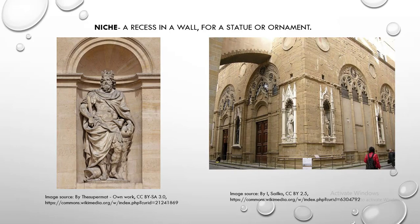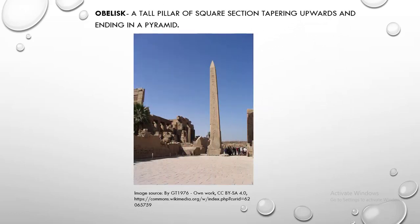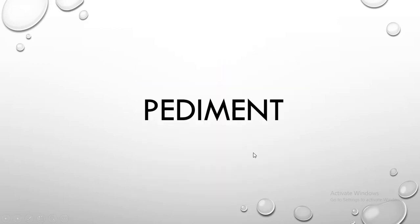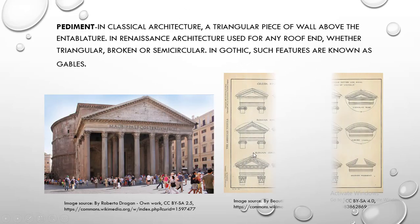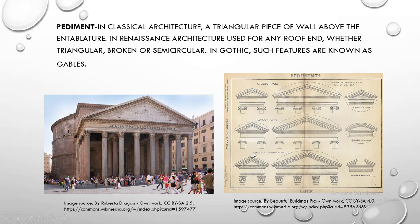Niche. Niche is a recess in a wall for a statue or ornament. Obelisk. Obelisk is a tall pillar of square section tapering upwards and ending in a pyramid. Octostyle. Octostyle is a portico with a range of eight columns. Pediment. Pediment is, in classical architecture, a triangular piece of wall above the entablature. In Renaissance architecture, used for any roof end, whether triangular, broken or semicircular.